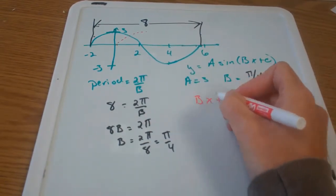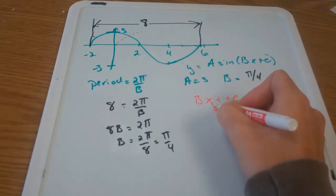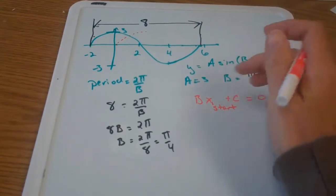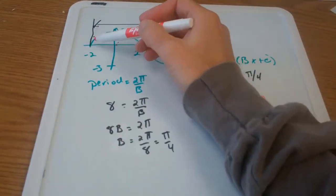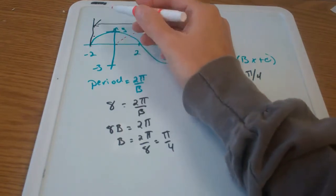I know what b is, I don't know what c is, and I want you to think of x here as my x-start. So x-start is where the sine curve normally starts. It starts on the x-axis and then goes up from there.